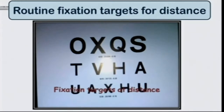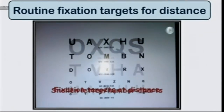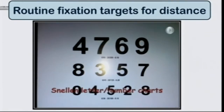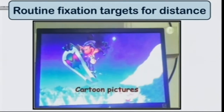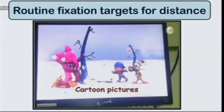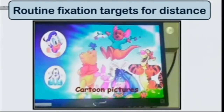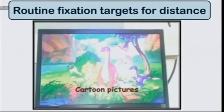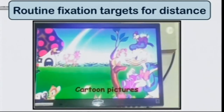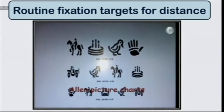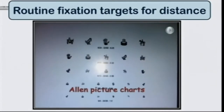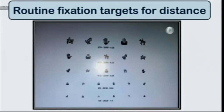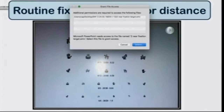All of us have Snellen visual acuity charts which are a part of every ophthalmic OPD. These fixation targets — either Snellen letter charts, number charts, or other parts of the E chart — can be used as a fixation target. In younger children, cartoon pictures which are part of Snellen charts can be used. In verbal children, Allen picture charts or LEA symbols can be used. So we don't need any extra equipment.